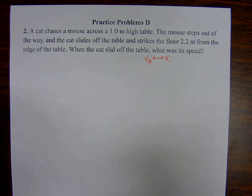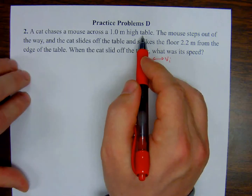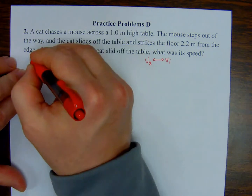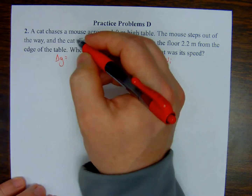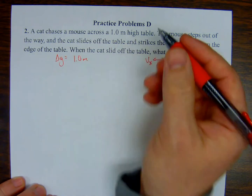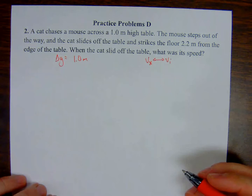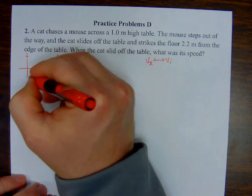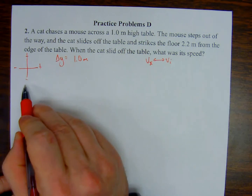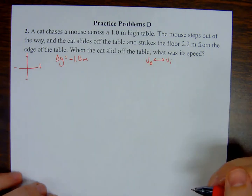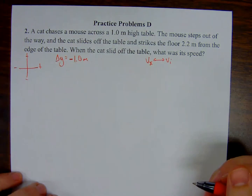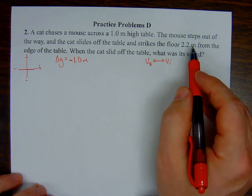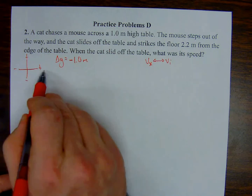What else were we given? One meter high table. The cat is going to fall off that table, so 1.0 meters high — that is delta y. Delta y is 1.0 meters, but the cat fell due to gravity, so considering our typical sign conventions, that delta y is actually negative — it's in the negative direction, meaning down. And then the cat slides off and strikes the floor 2.2 meters from the edge of the table. Assuming the cat was moving in the x direction, we'll keep that value positive.